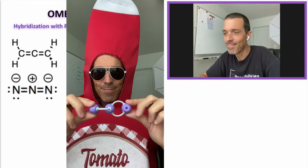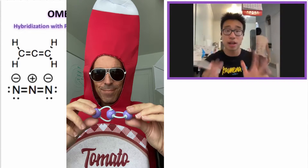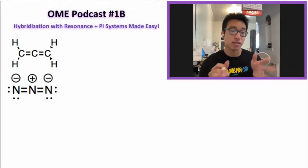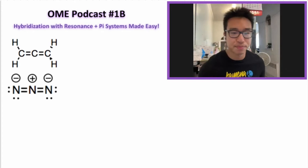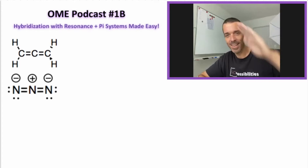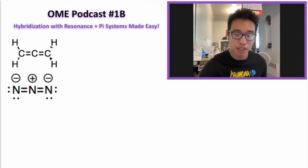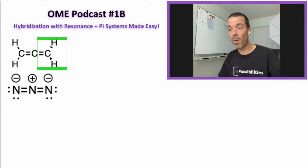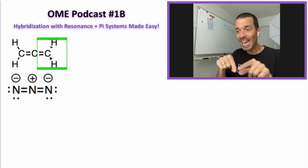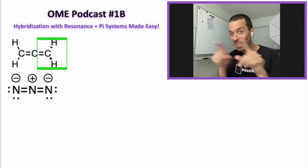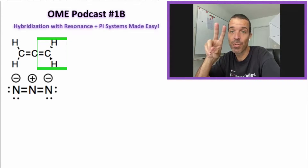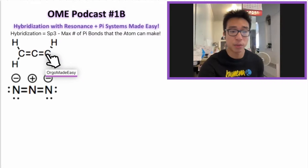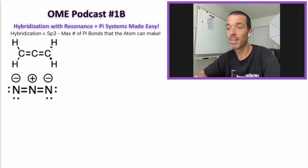We wanted to compare and contrast these two molecules so you can still apply what we talked about in the previous video. What's the hybridization of the carbon atom on the right? Using the formula sp3 minus the max number of pi bonds — the carbon on the right has one pi bond — so the answer is sp2.